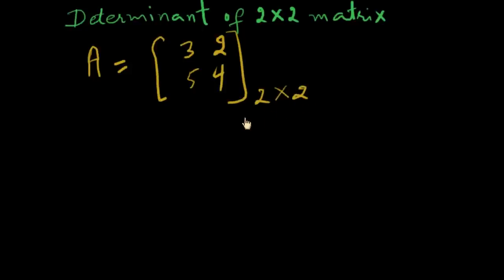For calculating its determinant, you have to write A into 2 bars and the matrix also into 2 bars instead of brackets: 3, 5, 2, 4.